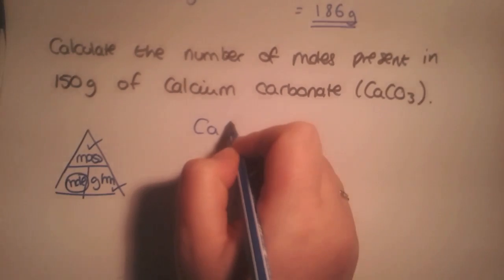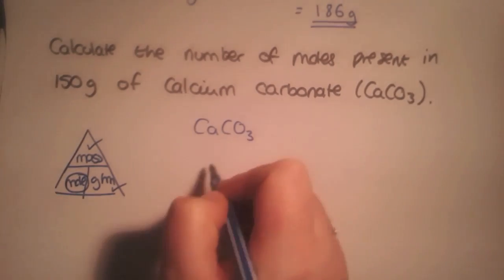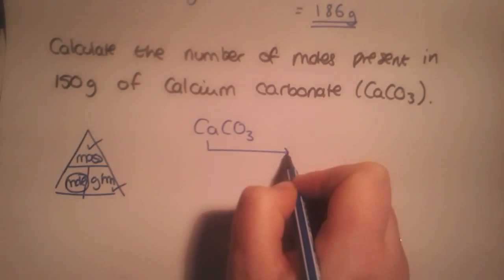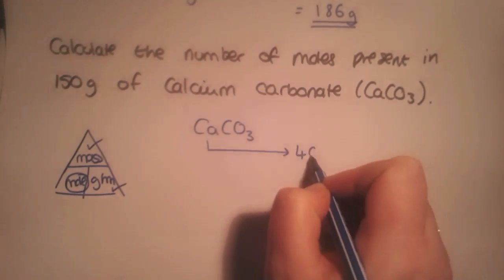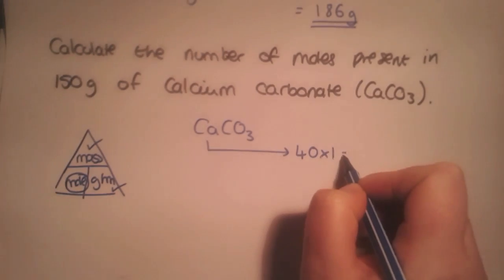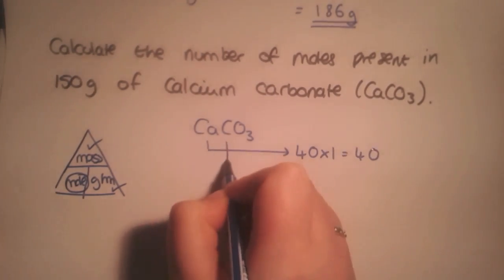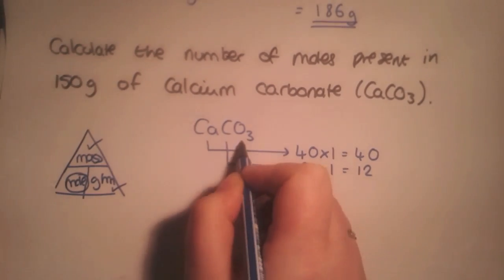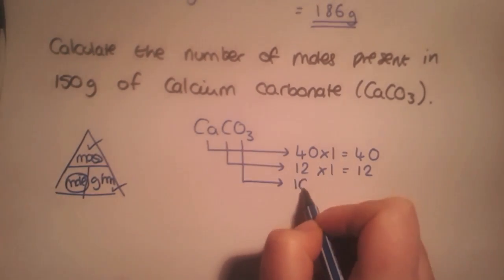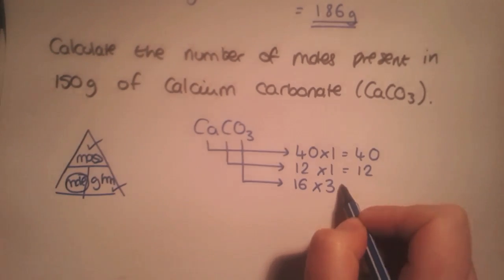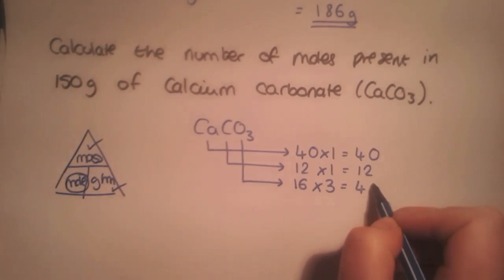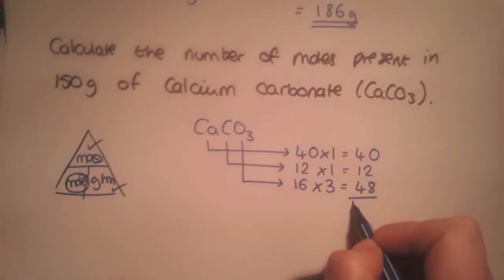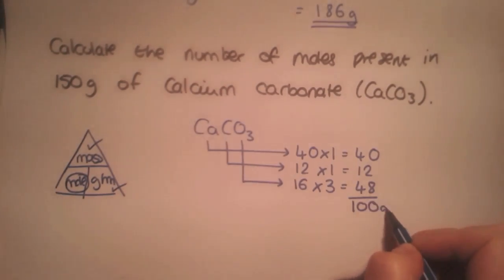The first step is to calculate the gram formula mass. Calcium has a relative atomic mass of 40. Carbon has a relative atomic mass of 12. And oxygen a relative atomic mass of 16, multiplied by 3 as we have 3 oxygens present. This gives us a gram formula mass of 100 grams per mole.